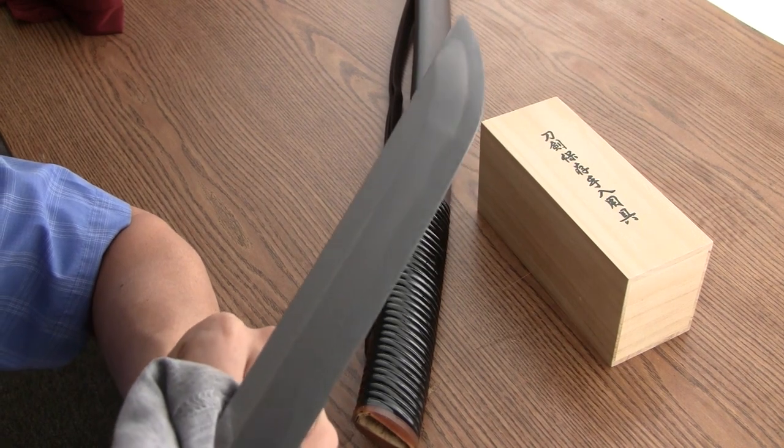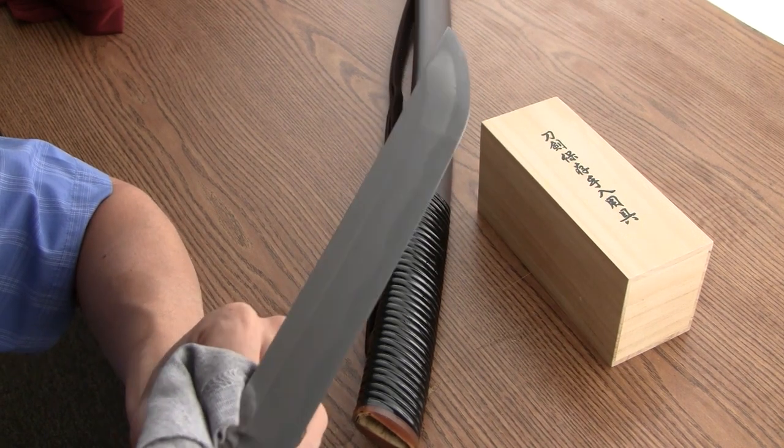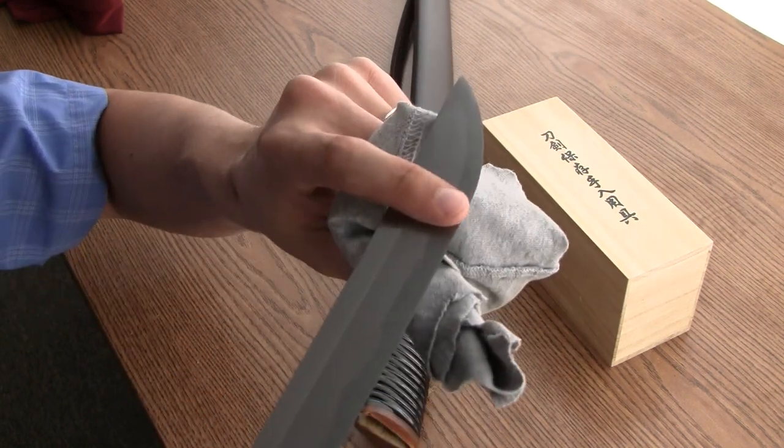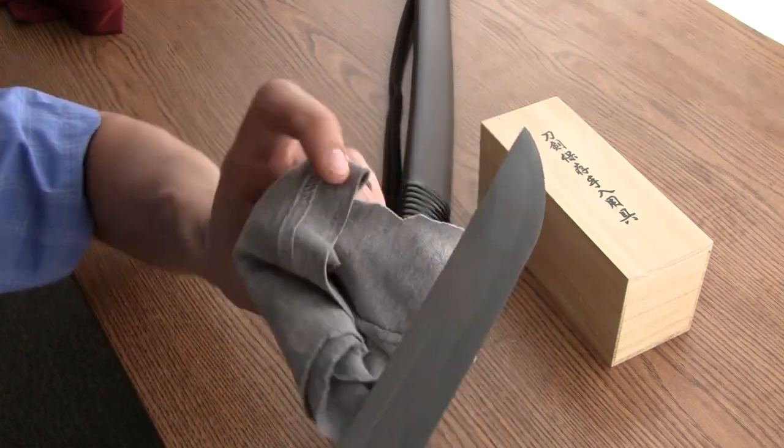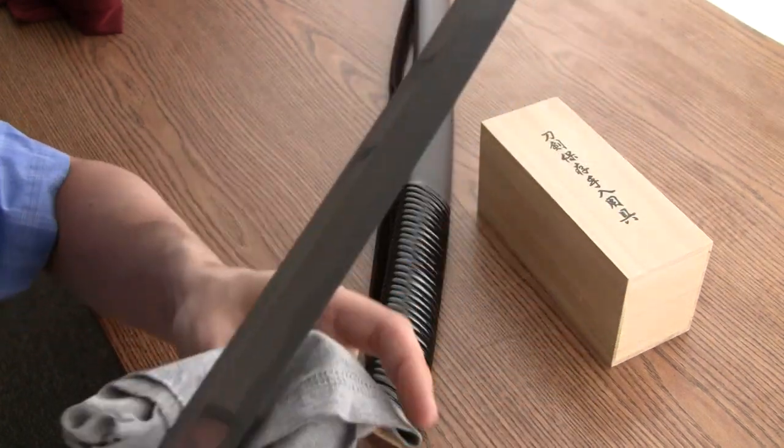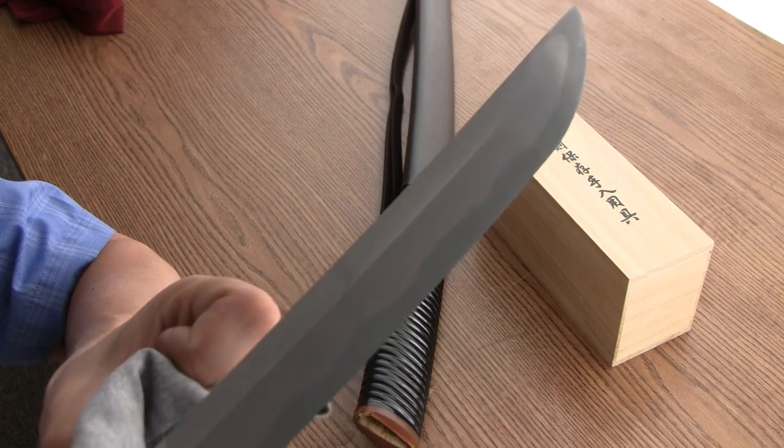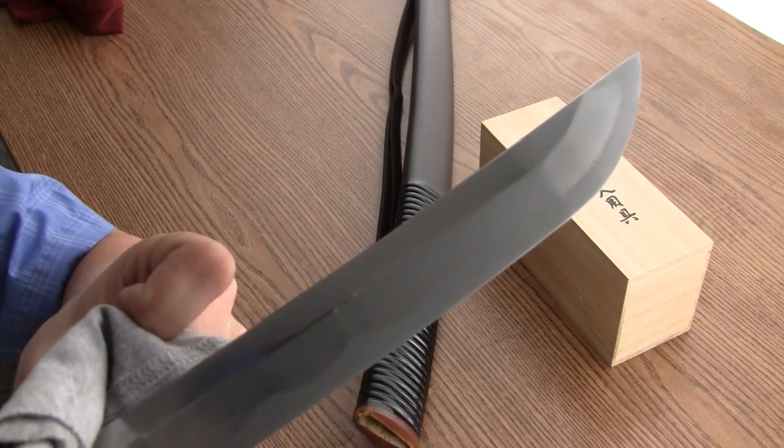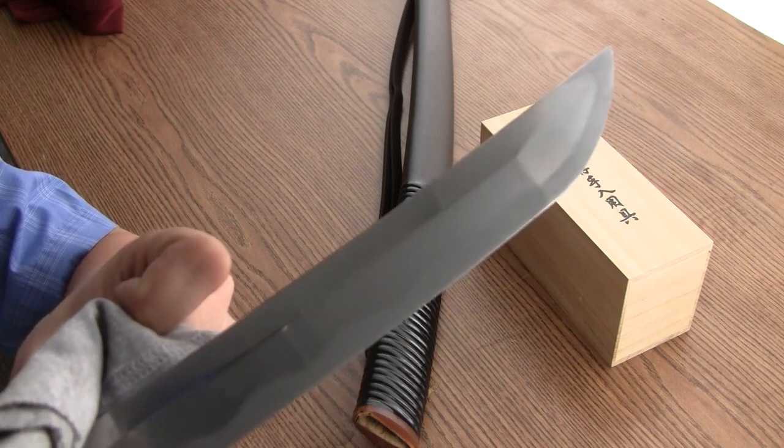Kissaki. Geometric yokote point line. It's where the transition from this plane to the kissaki happens. You can see that transition there as the light moves across it.